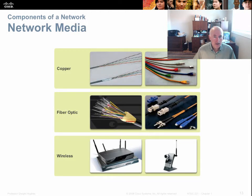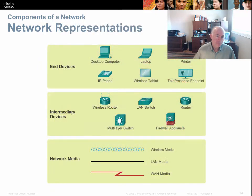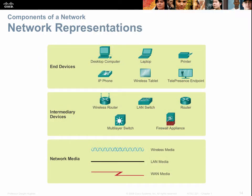There are three broad categories of media: copper, fiber optic, and wireless. End devices include laptops, printers, telephones, and computers. Intermediary devices include routers, switches, and firewalls.